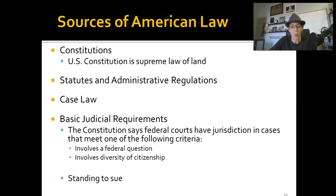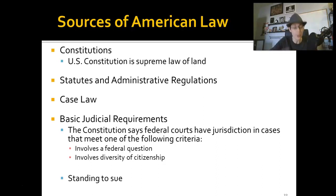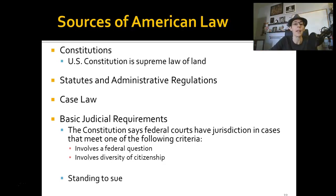There are basic judicial requirements. The Constitution says that federal courts have jurisdiction — jurisdiction means authority. Federal courts have authority to rule on cases that meet at least one of two criteria: it involves a federal question, or it involves diversity of citizenship. In that instance, regardless of where the case starts, whether in a local court or a state court, those central questions need to be determined by federal courts. You also need something called standing to sue — you need to effectively have a right to sue the other party.